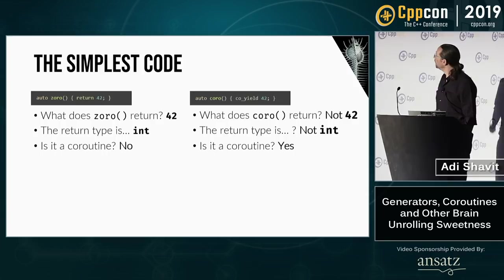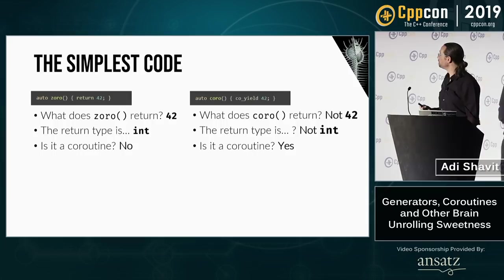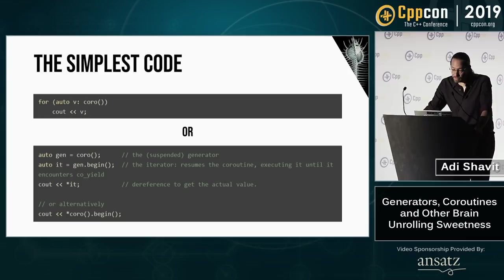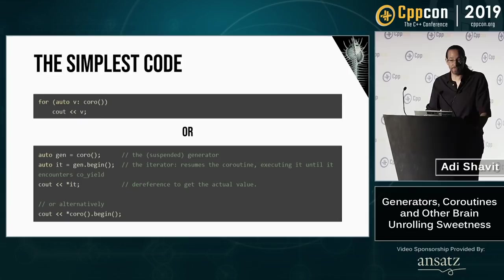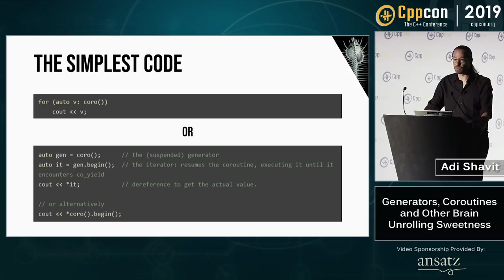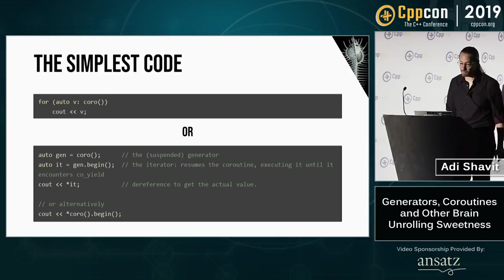How would we use coroutines? Like we use any other iterator object. A generator is a range, so we can put it in a range-for loop, which in this case will run just once and print 42. We can also unroll this loop manually: create a generator gen, retrieve the begin iterator into it, and deref it to get 42. Note that unlike istream_iterator, the first value — 42 — will only be ready after we call begin for the first time, not upon construction.